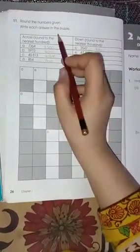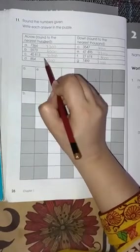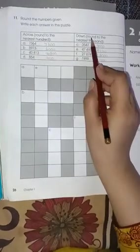Last page, page number 26 of chapter number 1. Here you have to round off the numbers. Here you have to round off to 100, and here you have to round off these numbers to 1000.